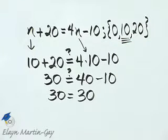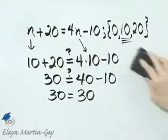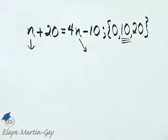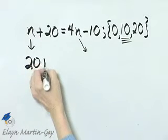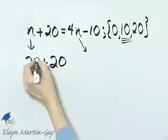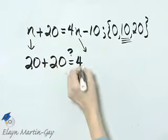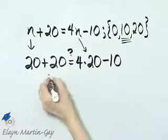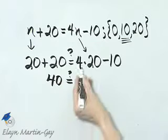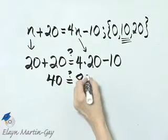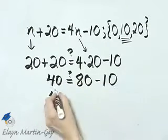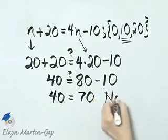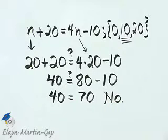That means that 10 is a solution to our equation. Now let's go ahead and try 20. Alright, let's let n be 20. So I have 20 plus 20. Is that equal to four times n is 20 minus 10? 20 plus 20 is 40. Is that equal to four times 20 is 80 minus 10? So is 40 equal to 70? No. That is not a true statement. 20 is not a solution.